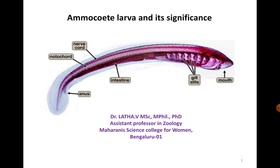This shallow pit made by one pair can be used by many pairs to spawn. Once the gametes are released, fertilization is obviously external because the gametes are released into the external environment in water. A large female sea lamprey can lay up to 2,36,000 eggs — that is the remarkable egg-laying ability of these lampreys.